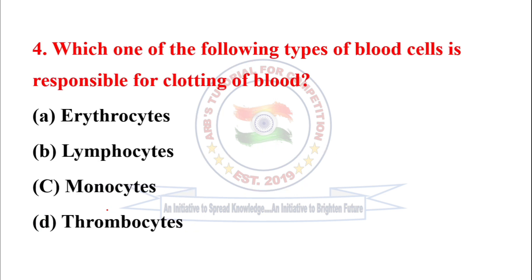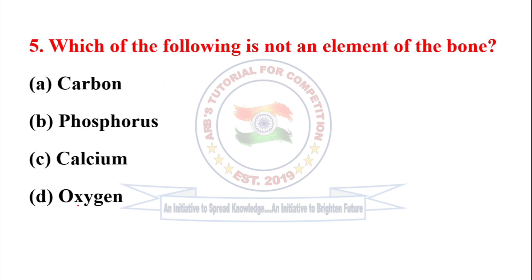Next question: Which one of the following types of blood cell is responsible for blood clotting? Next question: Which one of the following is not an element of the bone? Except option A, the difference is not an element of the bone. So option A is the correct option — it is not an element of the bone.